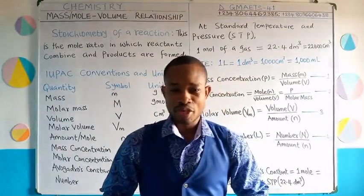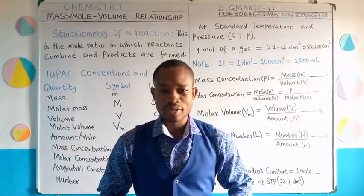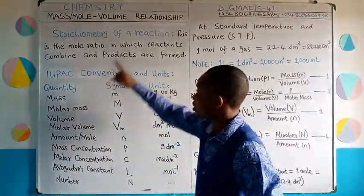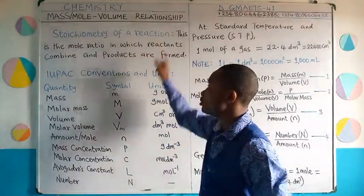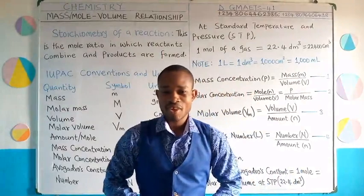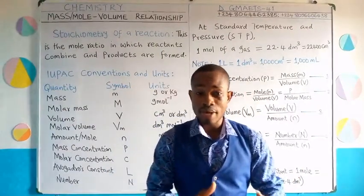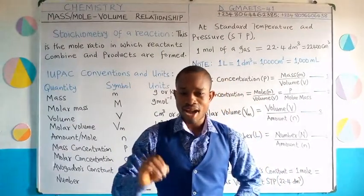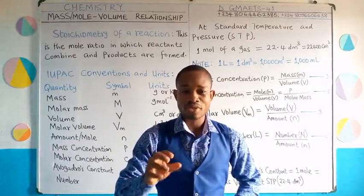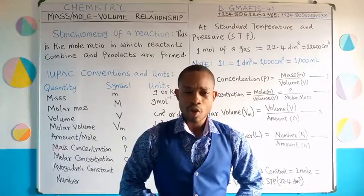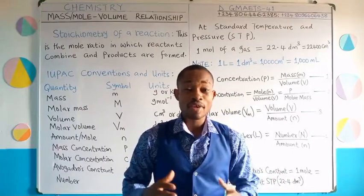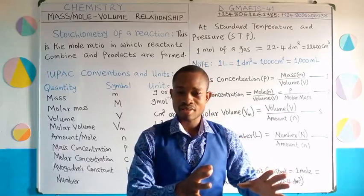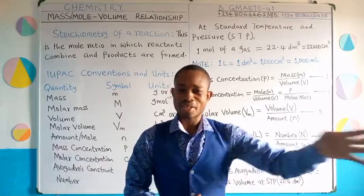Welcome to the GMATS 41 chemistry class. Today I will be teaching you the topic Mass-Mole-Volume Relationship. We are going to deal with the stoichiometry of chemical reactions, and this is part 1 of stoichiometric study. We are still going to deal with part 2 where we will focus on volumetric analysis, that is the titration aspect.